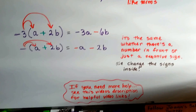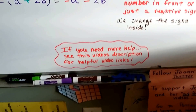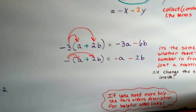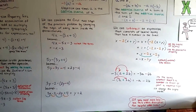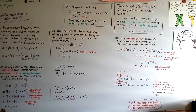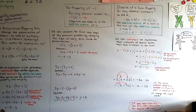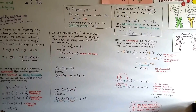If you need more help, you can see this video's description for helpful video links — there might be something about the distributive property or the previous video's link in case you didn't see it. You can just go in the description and click on the link. In 2.8c, we're going to talk more about grouping symbols — parentheses, brackets, and braces. I'll see you there.